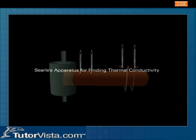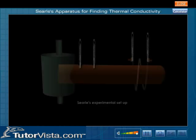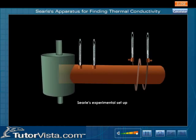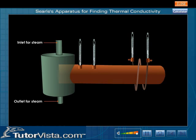Searle's apparatus is used for finding thermal conductivity. The coefficient of thermal conductivity of a solid can be experimentally determined using Searle's apparatus. The experimental setup is displayed here; the material whose coefficient of thermal conductivity is to be determined is taken in the form of a cylindrical rod.